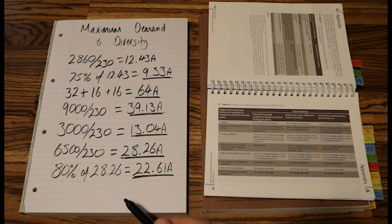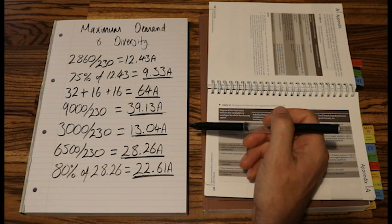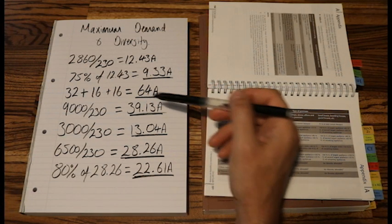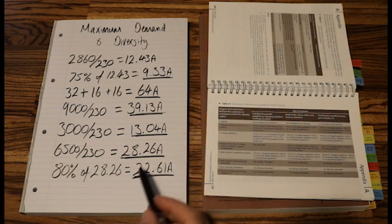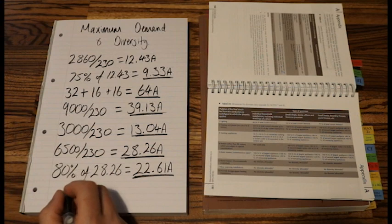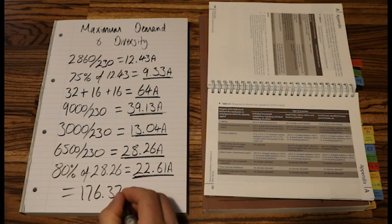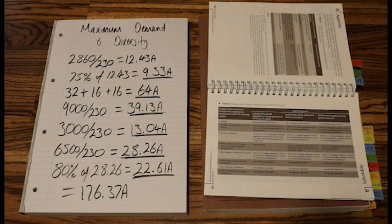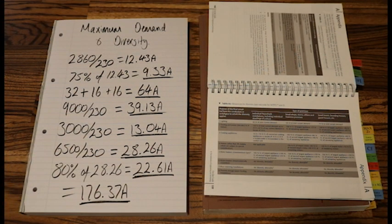That's all of our circuits done. Now what we need to do to work out our total current demand is add up all of these amp ratings. 9.33 plus 64 plus 39.13 plus 13.04 plus 28.26 plus 22.61 equals 176.37 amps. Our total demand, the answer for this question is 176.37 amps.